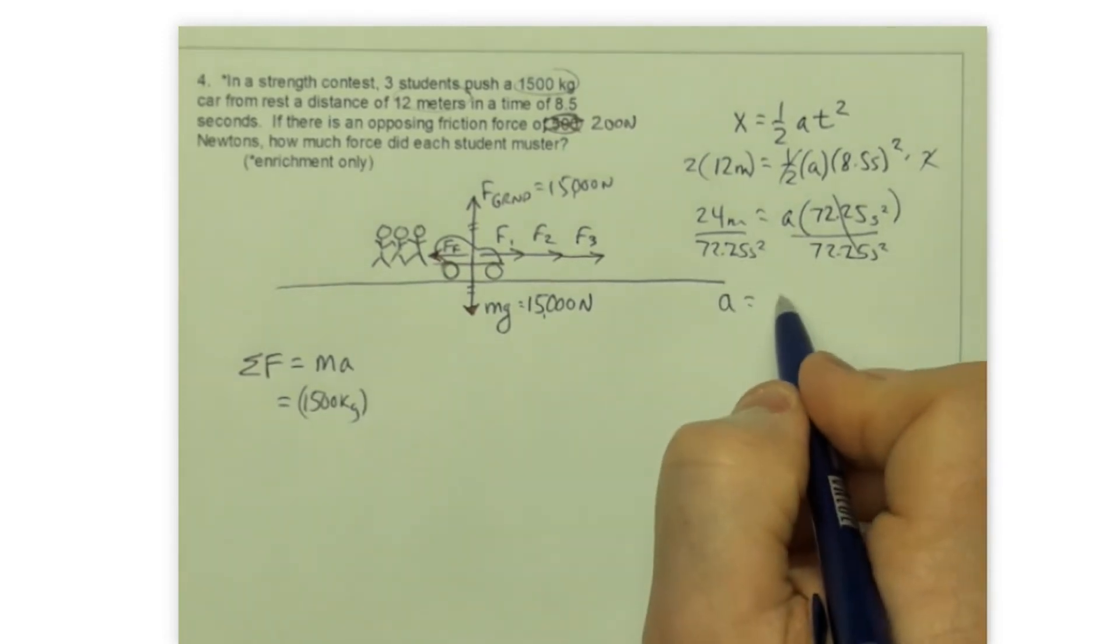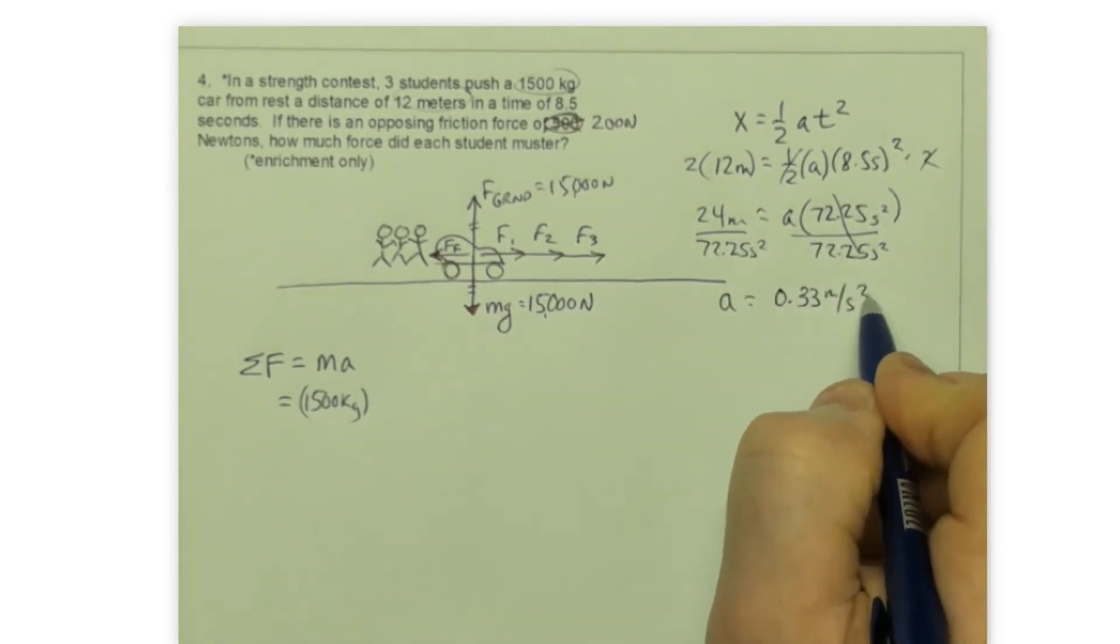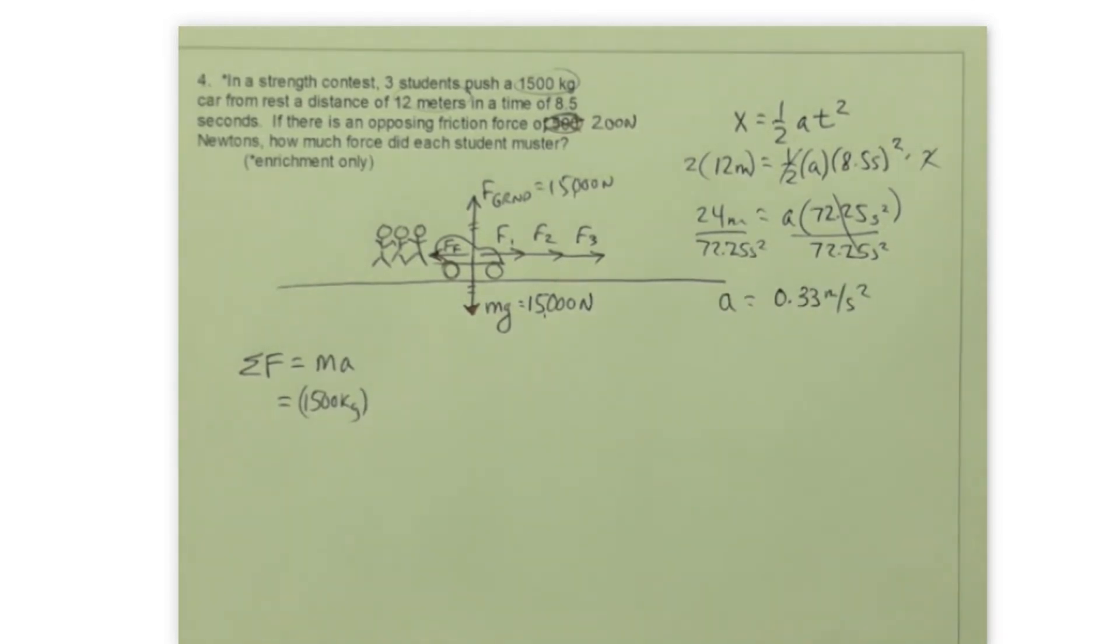And now I've got acceleration to be. My calculator will give me that. I get 0.33 and that would be meters per second squared.